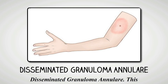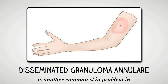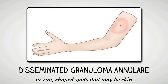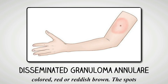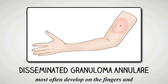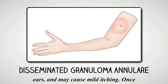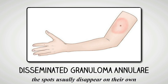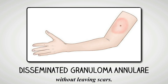Disseminated Granuloma Annulare. This is another common skin problem in diabetic people. It causes raised, bumpy or ring-shaped spots that may be skin-colored, red or reddish-brown. The spots most often develop on the fingers and ears, and may cause mild itching. Once your blood sugar level is under control, the spots usually disappear on their own without leaving scars.